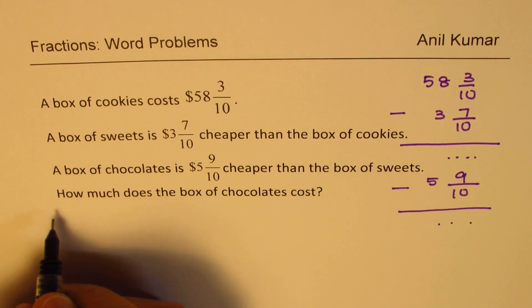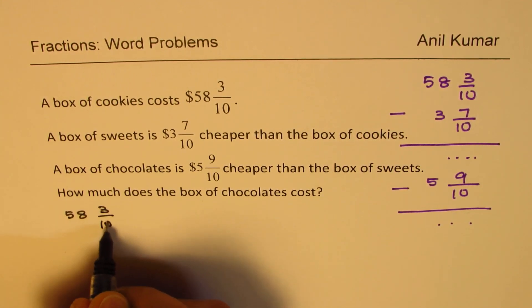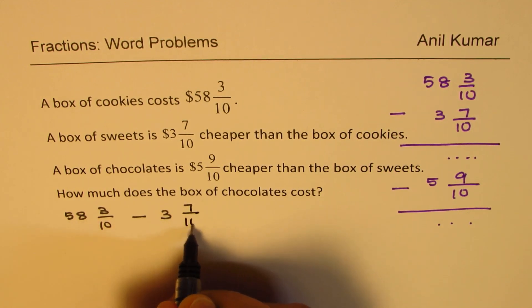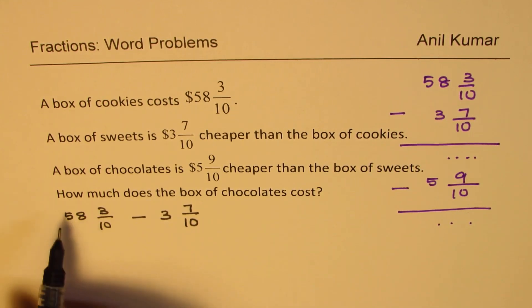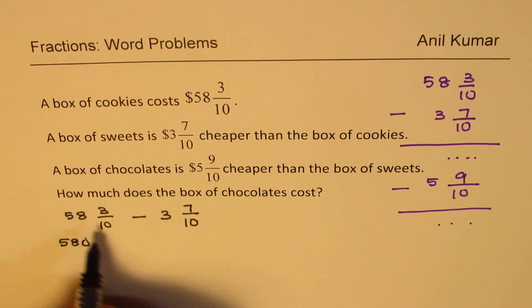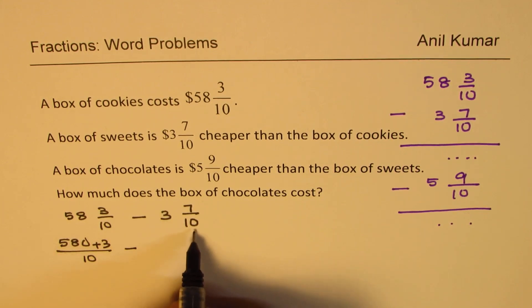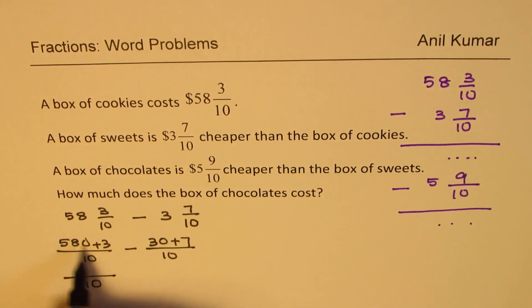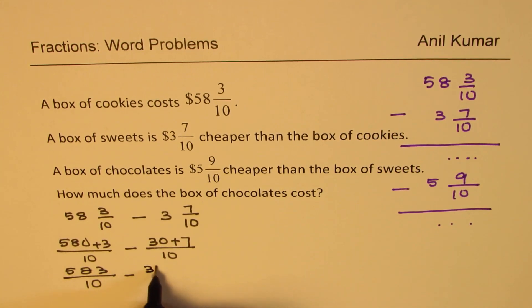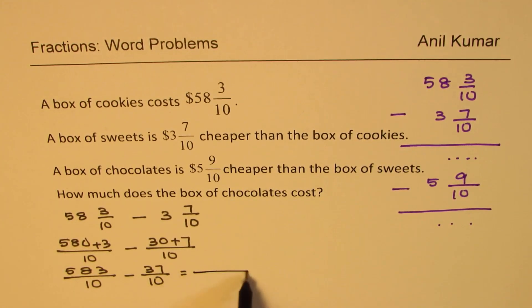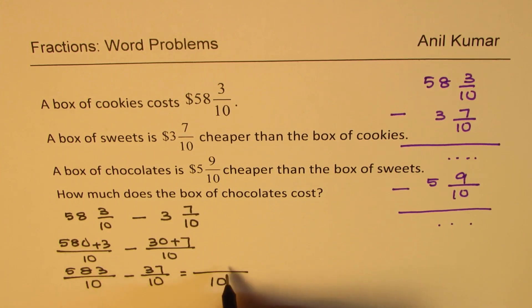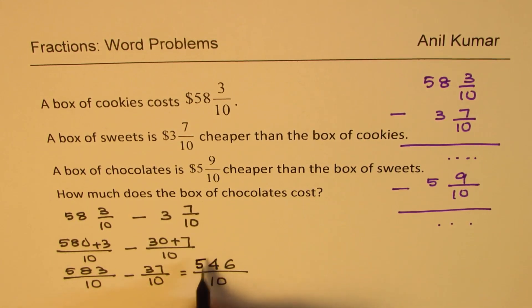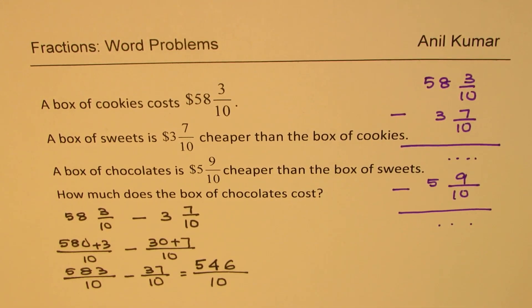Starting with the most expensive item: $58 3/10. We convert to improper fractions — 58 times 10 is 580, plus 3 gives 583/10. We subtract $3 7/10, which is 37/10. So we have 583/10 minus 37/10. Since the denominators are the same, 583 minus 37 equals 546, giving us 546/10.